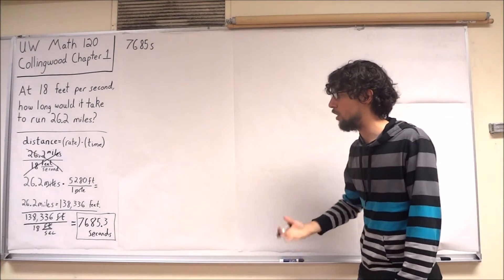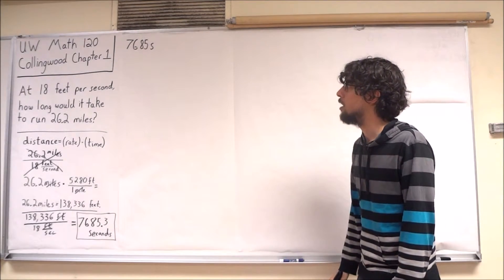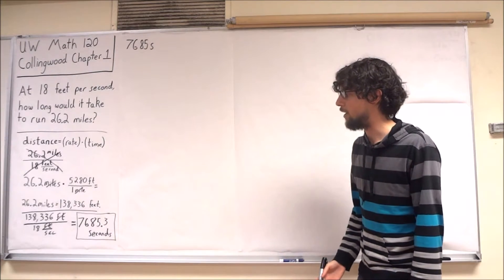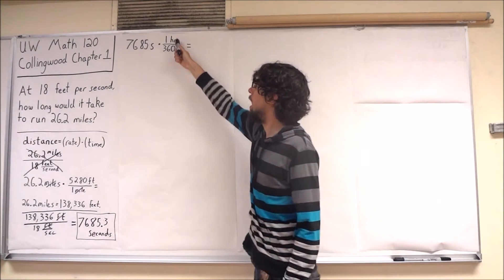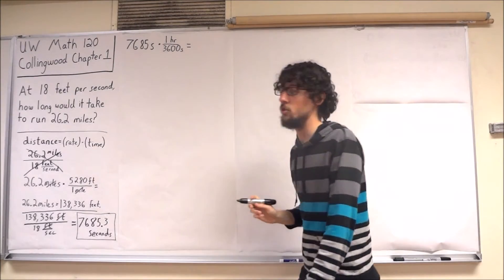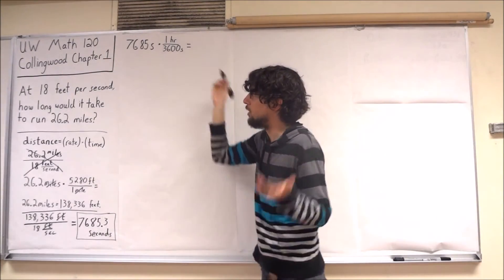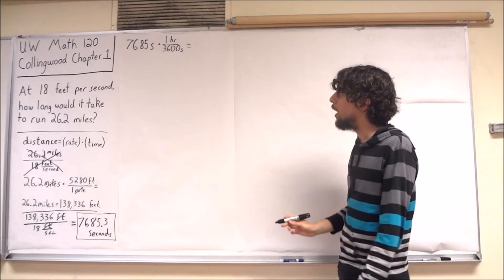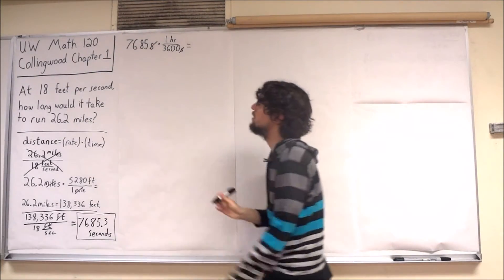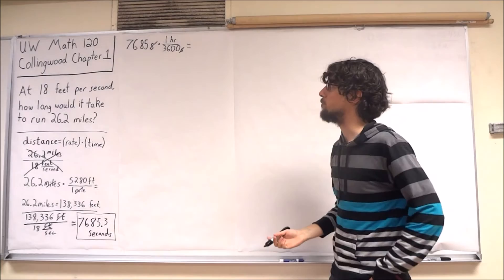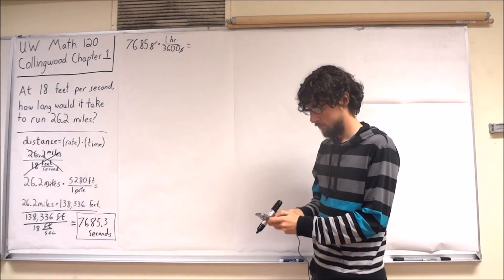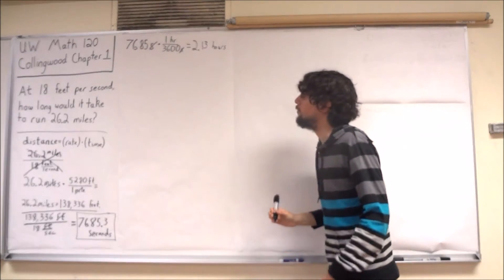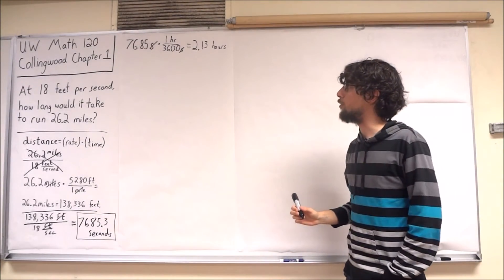And I'd like to convert this into hours. So again, I'm going to multiply by a conversion factor. One hour is equal to 3,600 seconds, so this conversion factor is equal to 1. But I find my seconds cancel, and I can now express the number of hours involved. And I find that this solution is 2.13 hours.